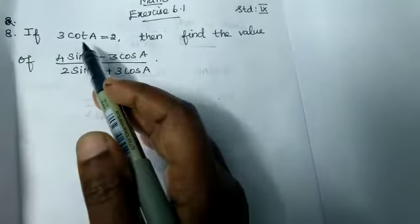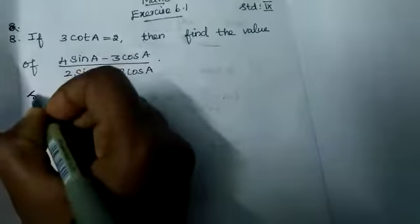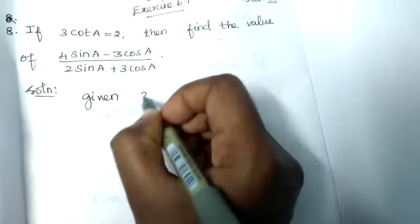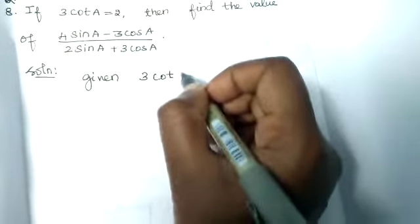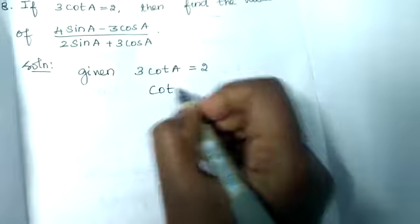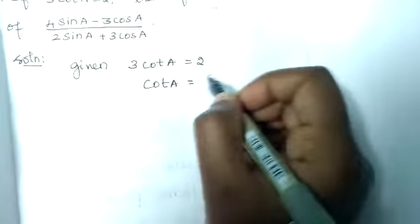What is given? 3cotA equals 2. Now how will you find out? You can find out cotA by bringing the 3 to this side. It becomes cotA equals 2 divided by 3.